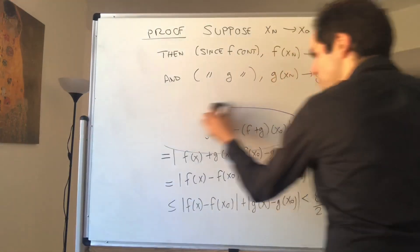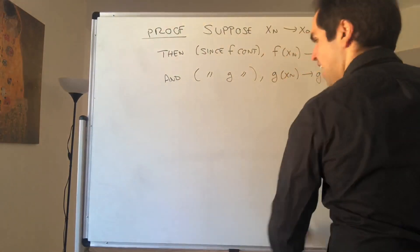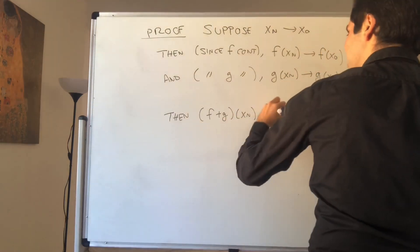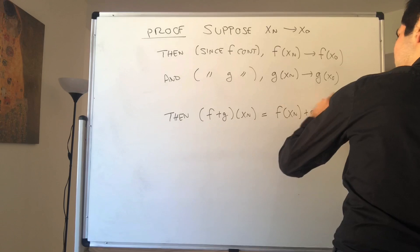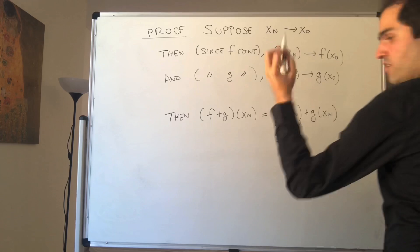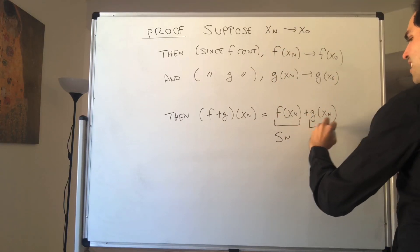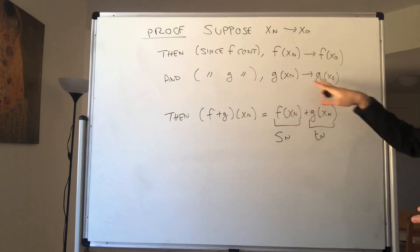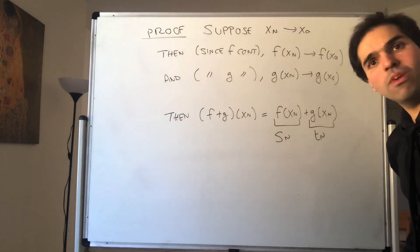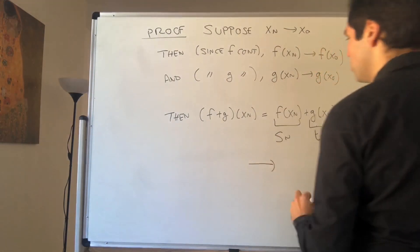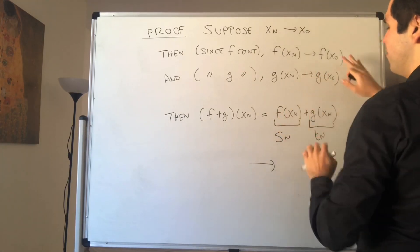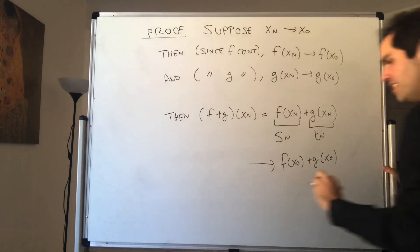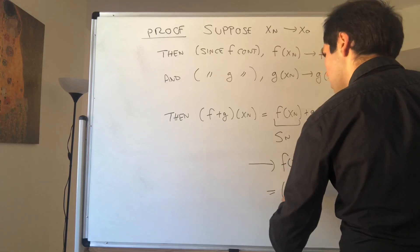What about (f+g)(x_n)? By definition, that is f(x_n) plus g(x_n). Now f(x_n) is some sequence s_n, and g(x_n) is some other sequence t_n. We know s_n goes to f(x naught) and t_n goes to g(x naught). So by the sum law for sequences — the limit of the sum is the sum of the limits — this goes to f(x naught) plus g(x naught), which is just (f+g)(x naught).